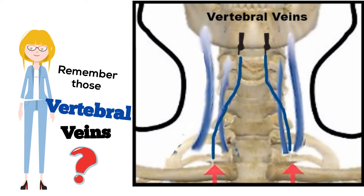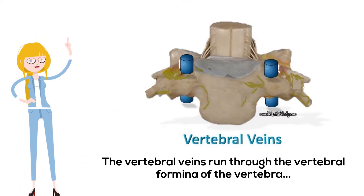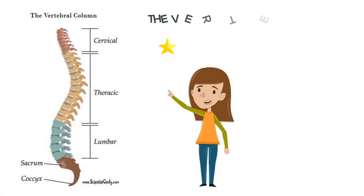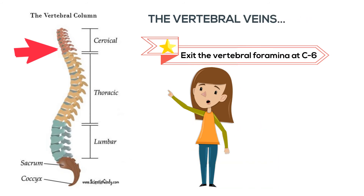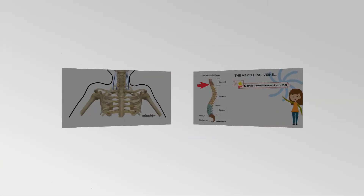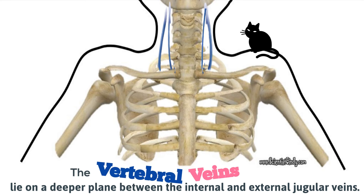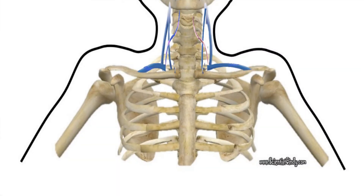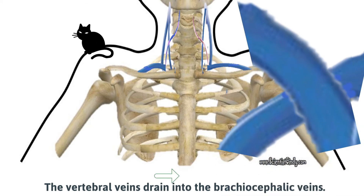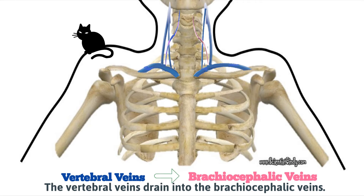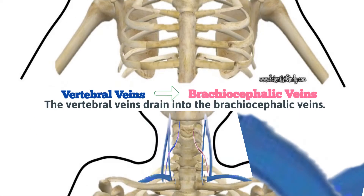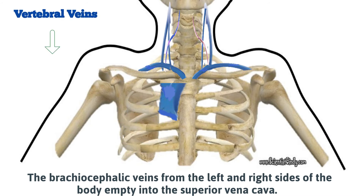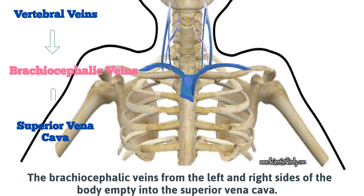Remember the vertebral veins? The vertebral veins run through the vertebral foramina of the vertebrae. They exit the vertebral foramina at C6 of the cervical vertebrae. The vertebral veins lie on a deeper plane between the internal and external jugular veins. The vertebral veins drain into the brachiocephalic veins, and the vertebral veins from the left and right sides of the body empty into the superior vena cava.